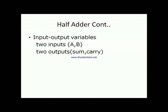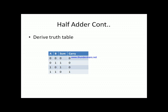We also require two output variables: sum and carry. Now for step three, we draw the truth table showing the relationship between inputs A and B and outputs sum and carry. When A=0, B=0: sum=0, carry=0. When A=0, B=1: sum=1, carry=0. When A=1, B=0: sum=1, carry=0. When A=1, B=1: sum=0, carry=1. The truth table is now complete.